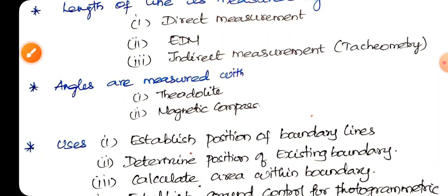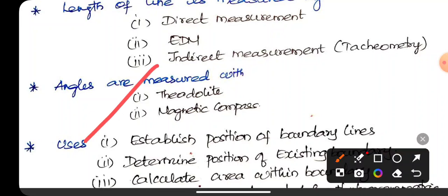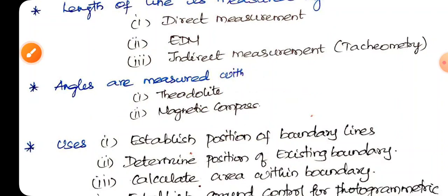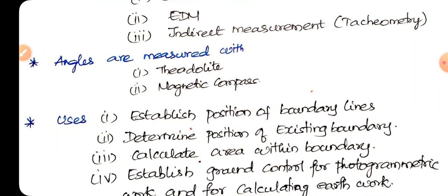So angles, suppose this is a line. Now this is A, B, C. Now this angle, this is a theodolite, it is a compass. Magnetic compass, that is a prismatic survey. This is a compass survey.